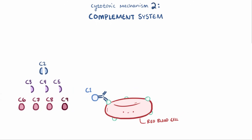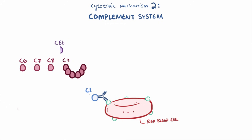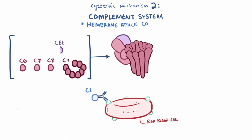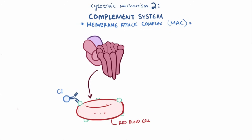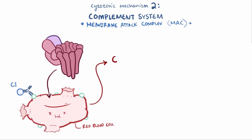The second cytotoxic mechanism requires following the complement system through to the end. C5b, C6 through C8, and multiple C9 molecules come together to form the membrane attack complex, or MAC. The MAC attacks the cell by inserting itself into the cell membrane, punching a hole or creating a channel that allows fluid and molecules to flow in and out. Due to the osmotic difference, fluid rushes into the cell, causing it to swell and eventually burst — called cell lysis — and it dies. This is where the name cytotoxic comes from.